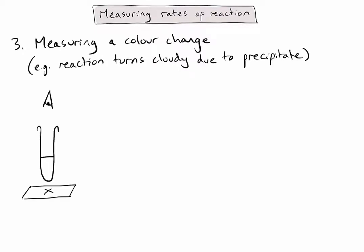Let's consider an example where my reaction produces a precipitate or solid particles which make my solution go cloudy. In this example, we're doing a chemical reaction in a boiling tube, and we're looking down from above to see how long it takes for the black cross written on the paper underneath the tube to disappear.